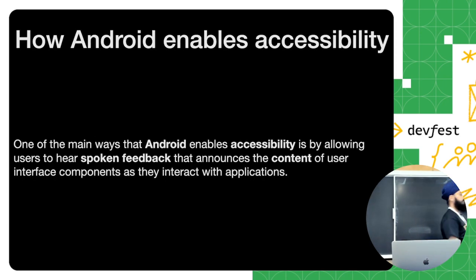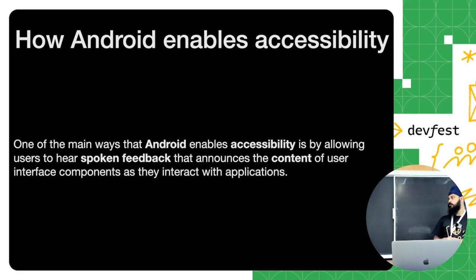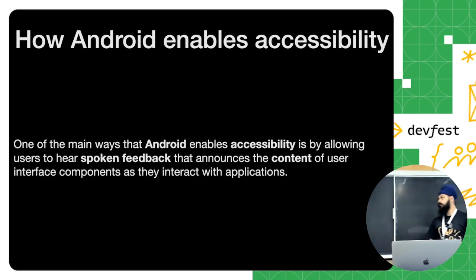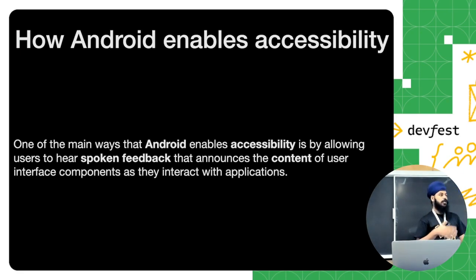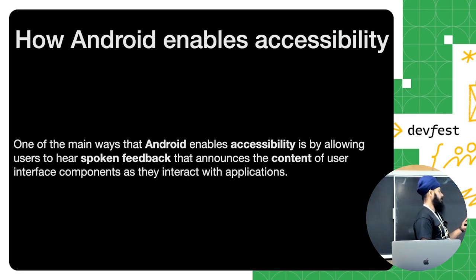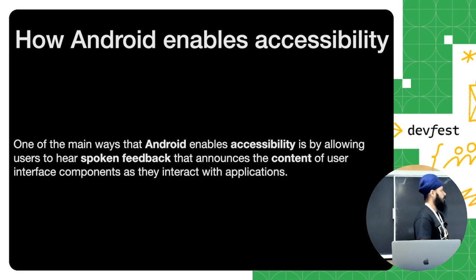So how does Android enable accessibility? There are a couple of ways Android provides support for accessibility. One of the main ones is providing spoken feedback — whatever is on the UI the user is currently seeing on screen, applications like TalkBack or the Samsung screen reader provide spoken feedback when turned on.